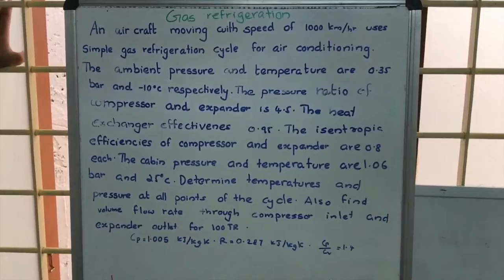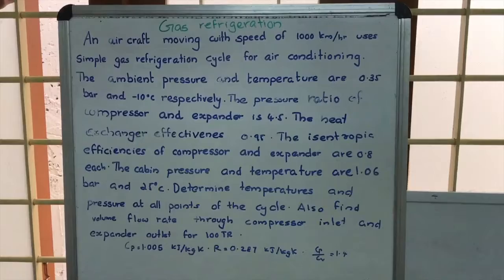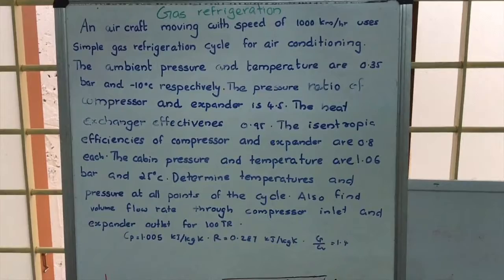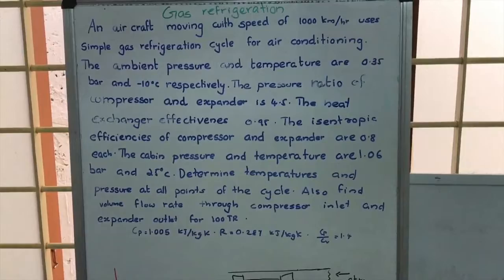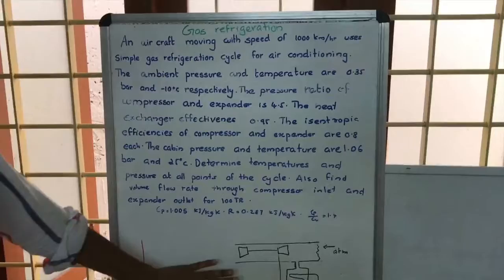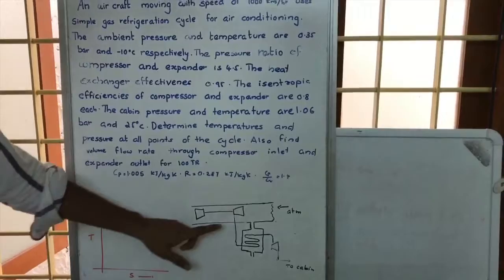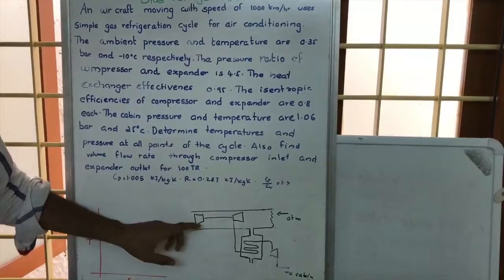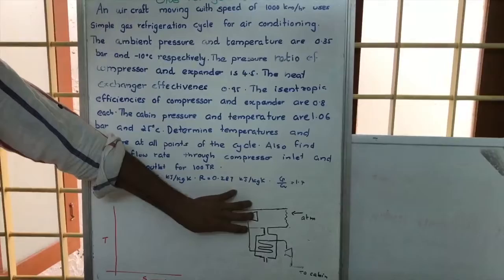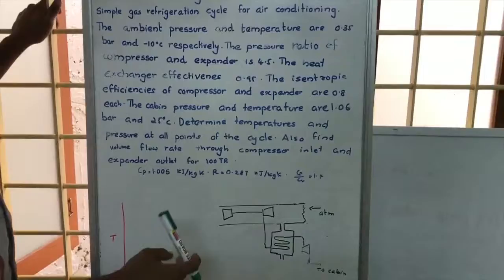A gas refrigeration problem using a simple gas refrigeration cycle is being discussed. An aircraft is moving with a speed of 1000 km per hour and uses a simple gas refrigeration cycle for air conditioning. This is the main compressor of the aircraft and this is the turbine. We are mainly focusing on the refrigerating area.